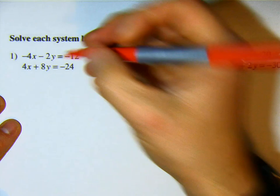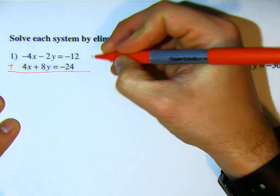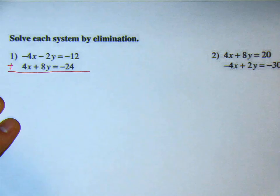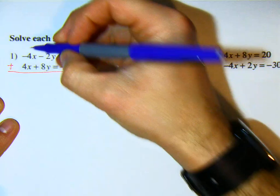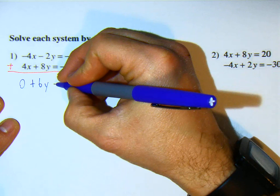We're going to pretend that it is an equation. I'm going to add these two together. So, negative 4x plus 4x is 0, negative 2y plus 8y is 6y, and negative 12 plus negative 24 is negative 36.